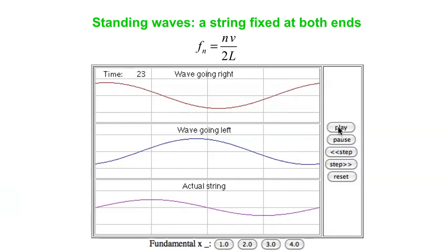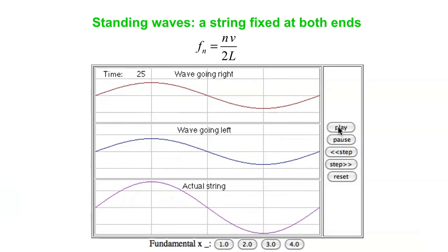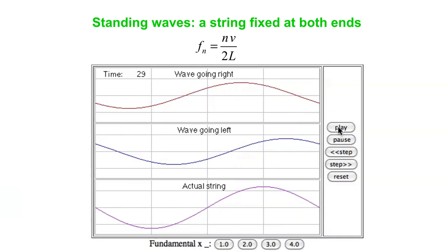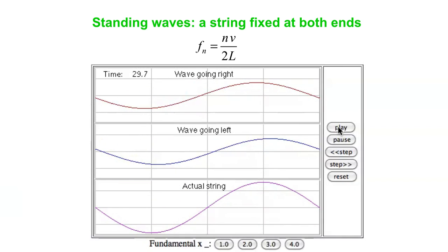Now you see three nodes, two antinodes, and a standing wave on the string formed from a wave going right and a wave going left.